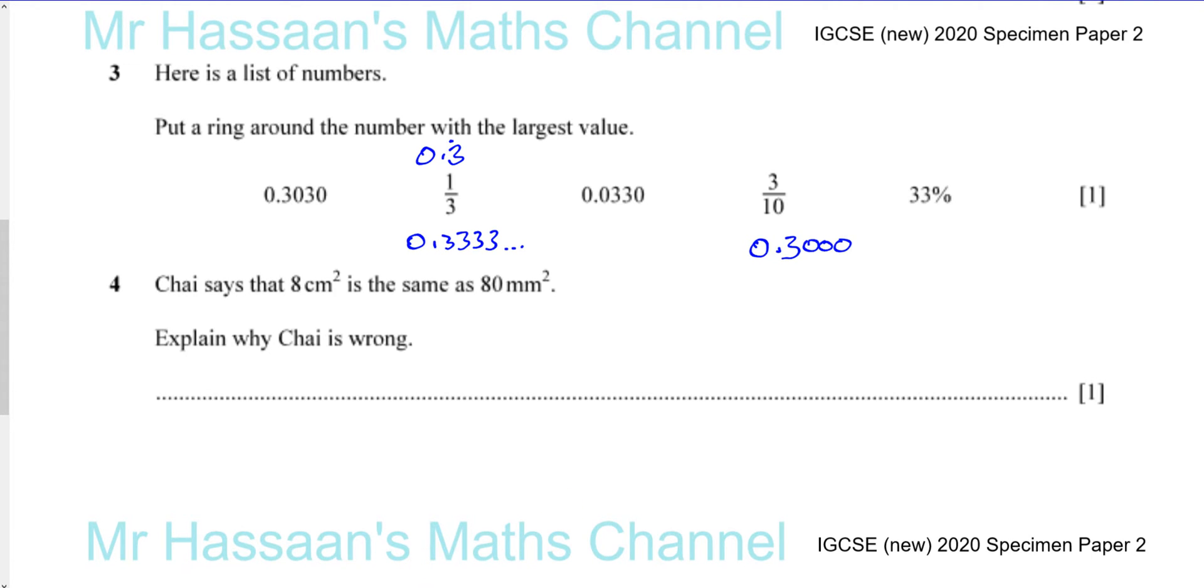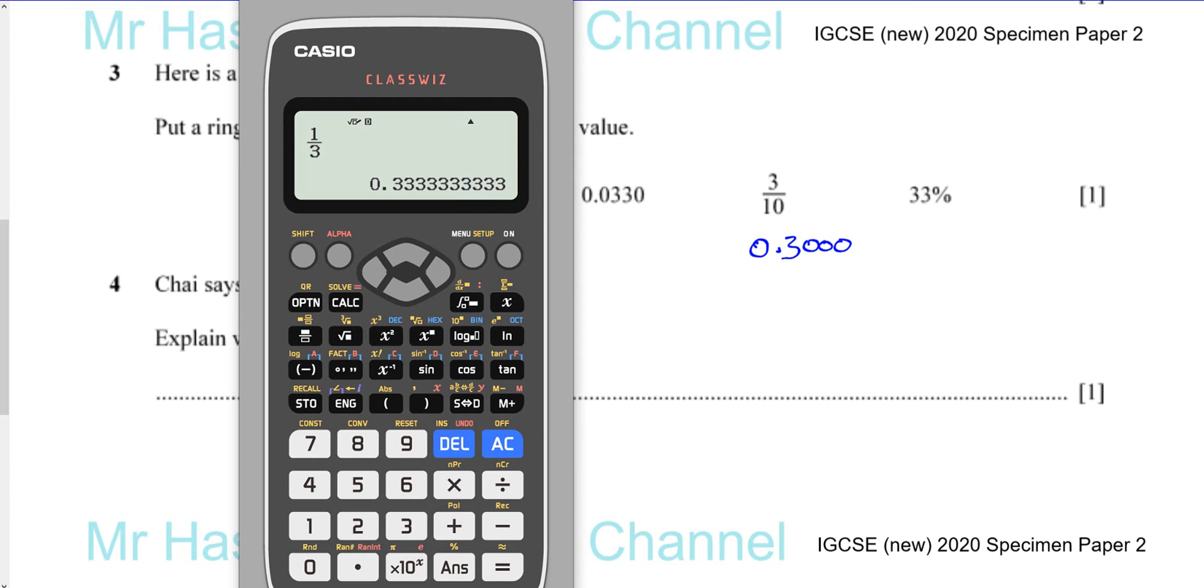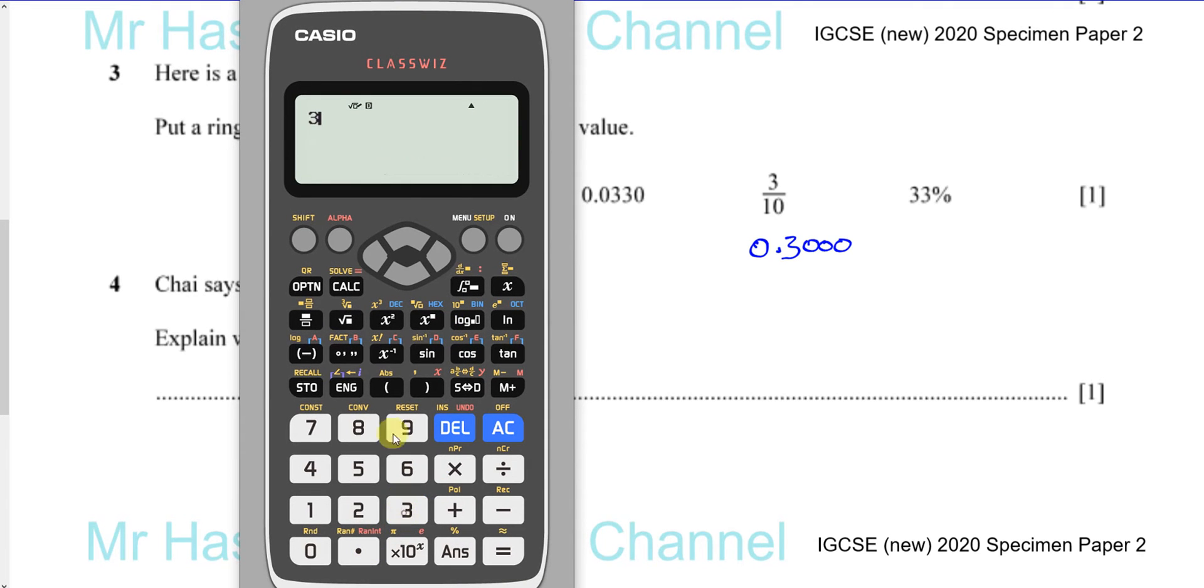Okay, again, if you're not too confident about that, which you should be really, unless you have a very severe case of calculator writers, 3 divided by 10, 3 over 10. Okay, you press the S to D button, it gives you 0.3.